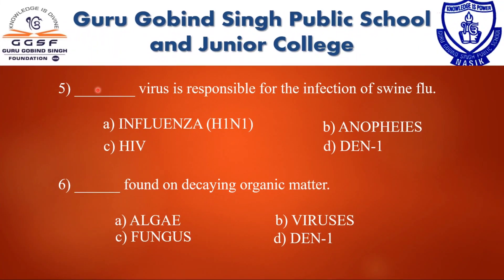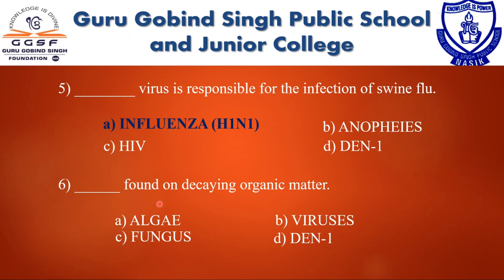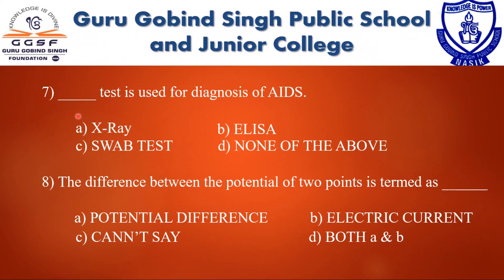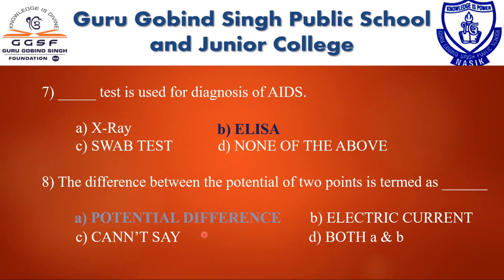The next question: Dash virus is responsible for the infection of swine flu. The correct answer is influenza H1N1. Question 6: Dash is found on decaying organic matter. The options are algae, viruses, fungus, and none. The correct answer is fungus. Next question: Dash test is used for diagnosis of AIDS. The options are X-ray, ELISA, swab test, or none of the above. The correct answer is ELISA. Next: The difference between the potential of two points is termed as — the correct answer is potential difference.